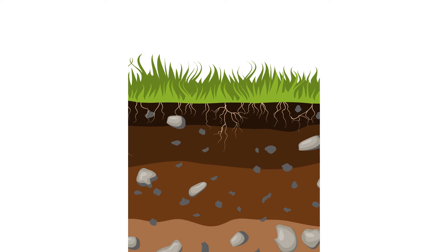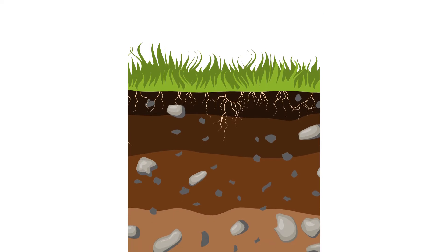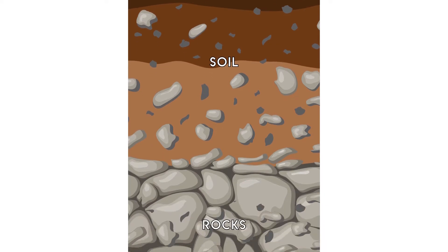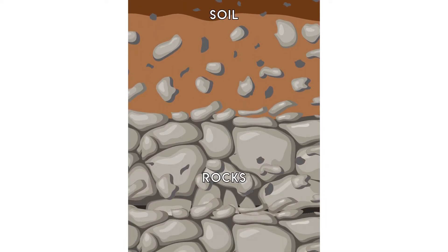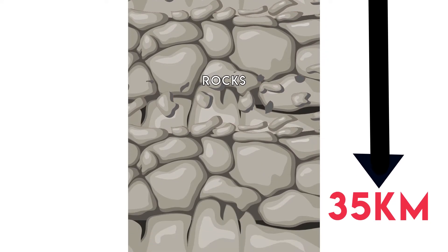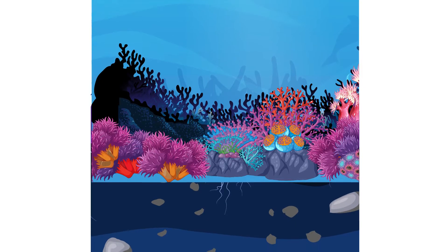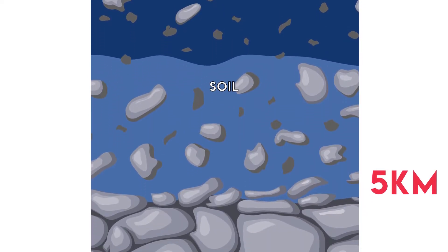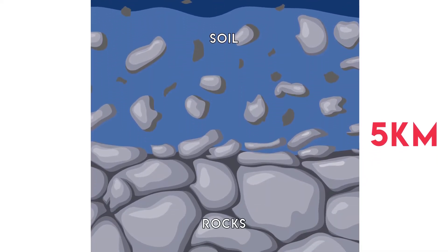If you start digging a hole, at first you will find soil and after some depth, you will encounter rocks. Till the next about 35 km, you will find only rocks. And if you dig a hole on the ocean bed, you will find rocks till the depth of only 5 km.